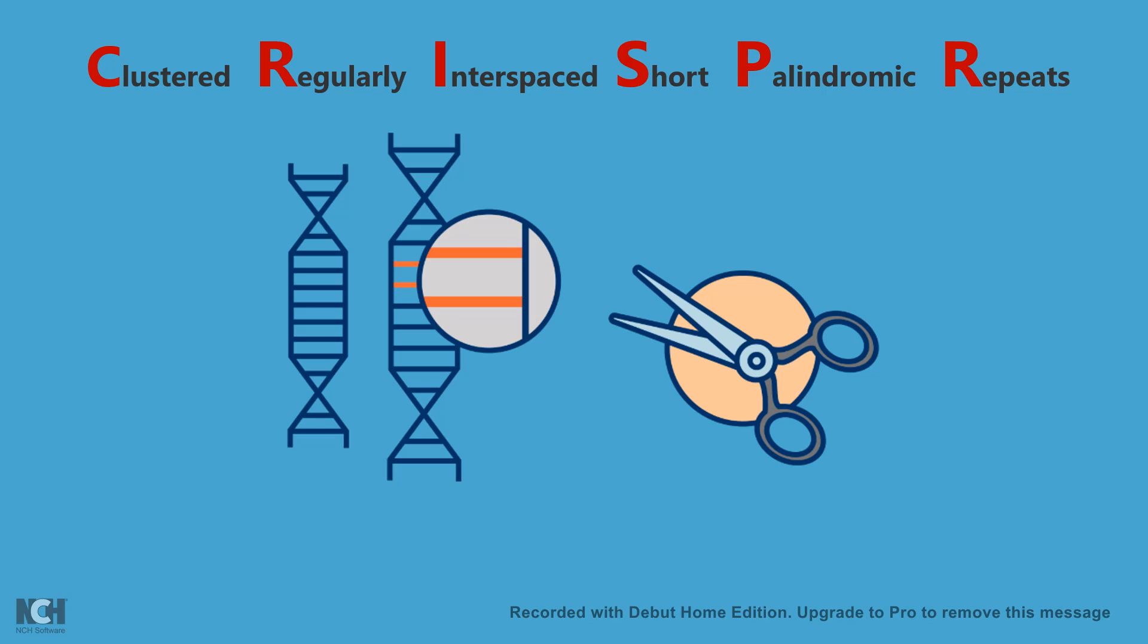And there is a protein which is associated with CRISPR locus which is known as CRISPR-associated protein 9, which works like a molecular scissor. We're going to talk about this mechanism in a moment.